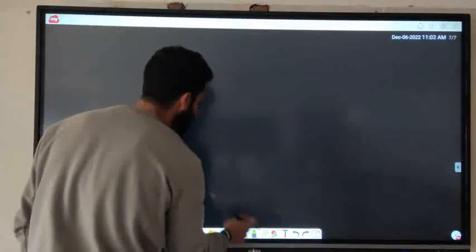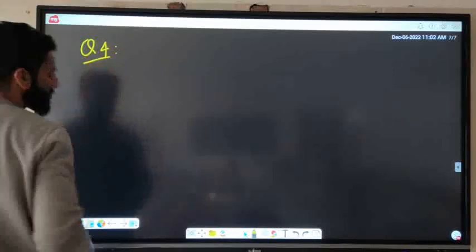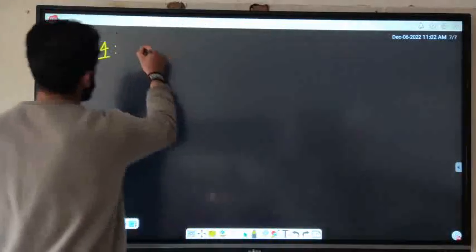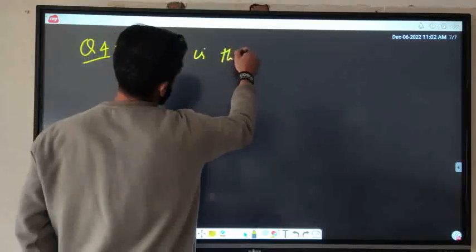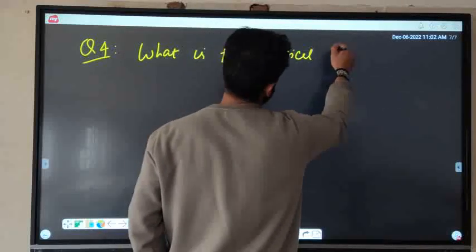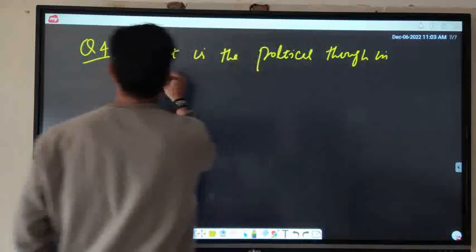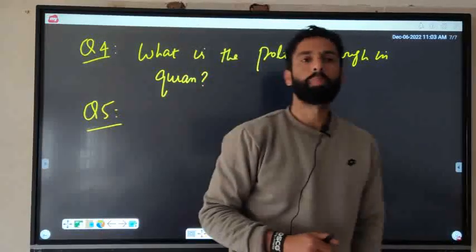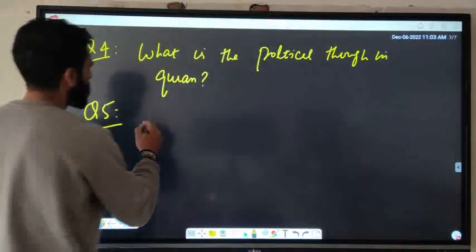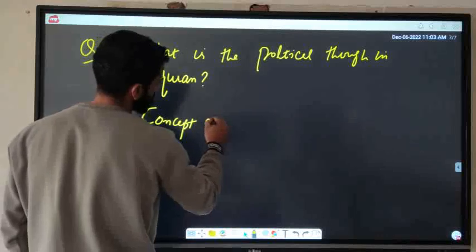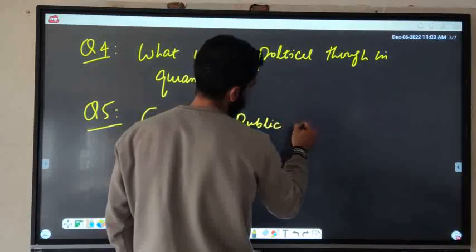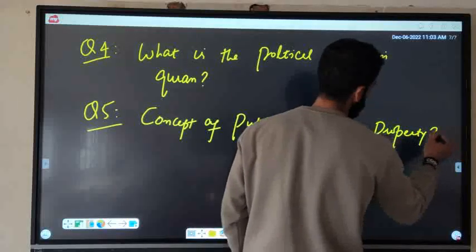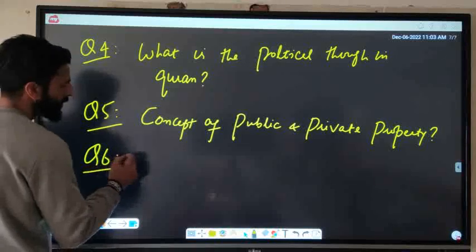Coming to question number four: What is the political thought in Quran? What is the concept of public and private property? What is the difference between public and private property?